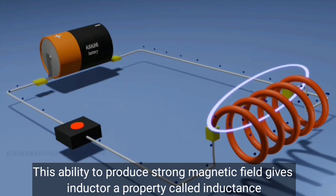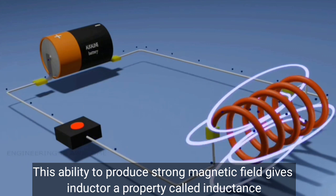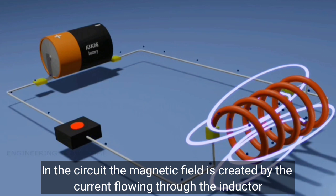This ability to produce a strong magnetic field gives inductor a property called inductance. In the circuit, the magnetic field is created by the current flowing through the inductor.